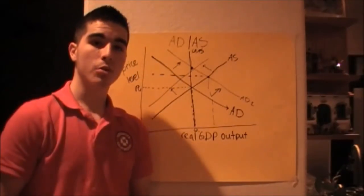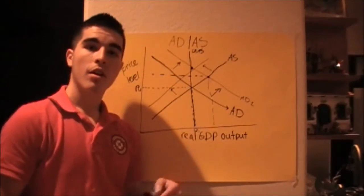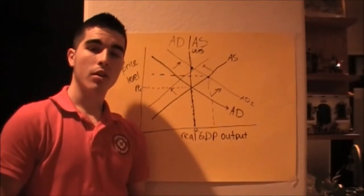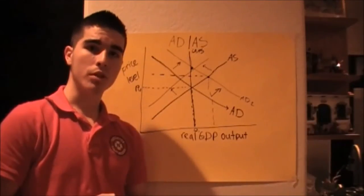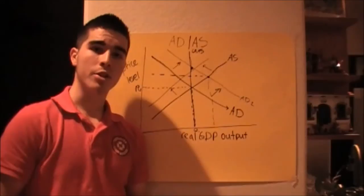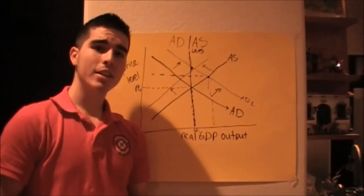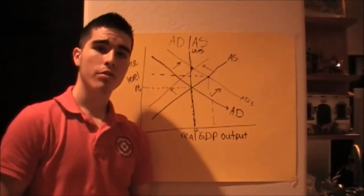The last term of the ADAS graph is AD itself. The components of AD are net exports, consumption, government spending, and gross investment. Now AD is moved by two policies, fiscal and monetary.